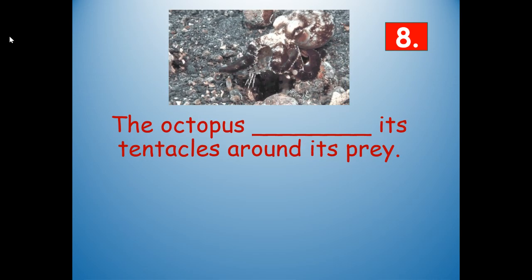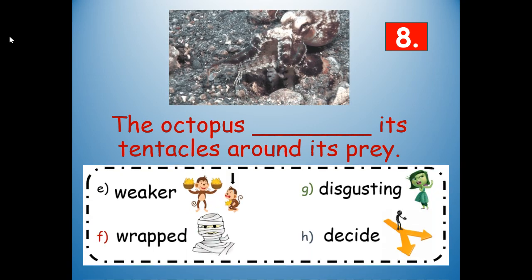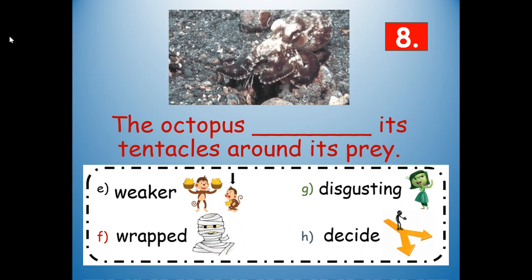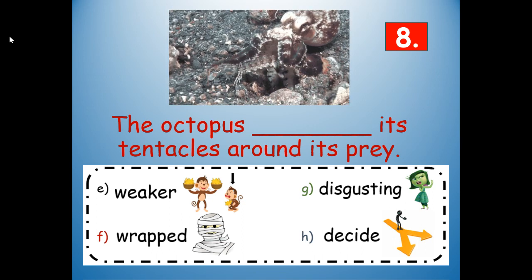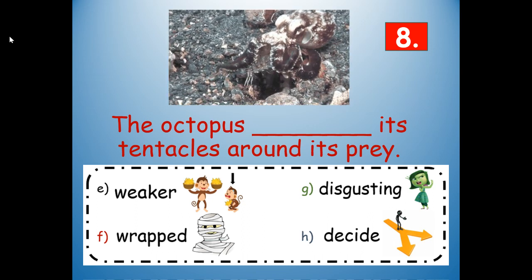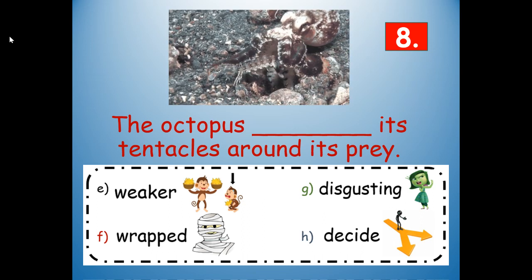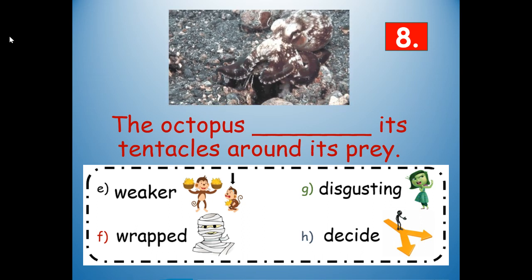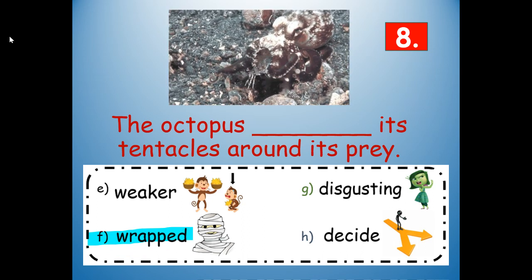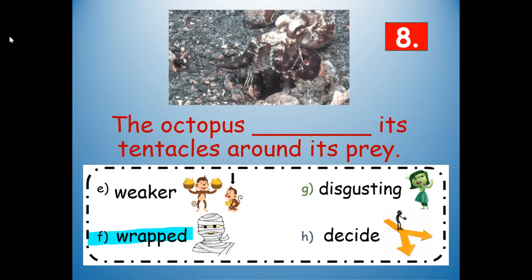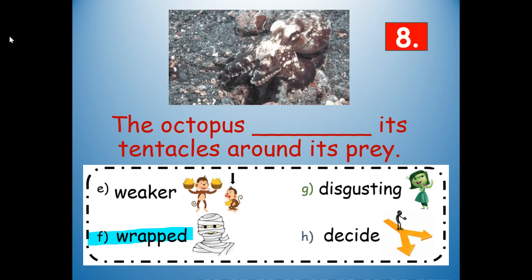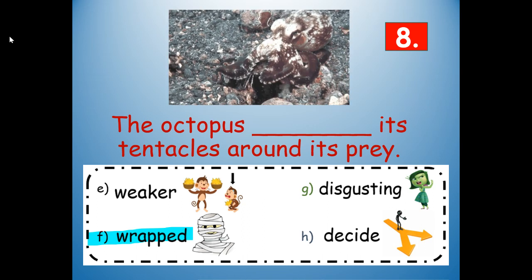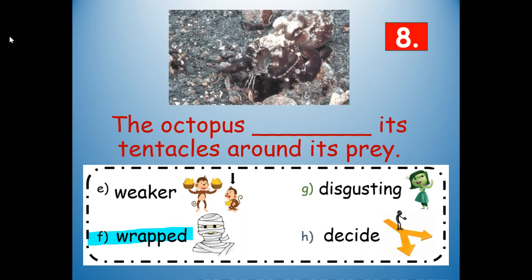Number eight: the octopus blank its tentacles around its prey. Would it be weaker, wrapped, disgusting, or decide? What makes sense given the picture clues and where the word is in the sentence? Wrapped — W-R-A-P-P-E-D. To wrap means to put yourself around something. The octopus wrapped its tentacles around its prey.